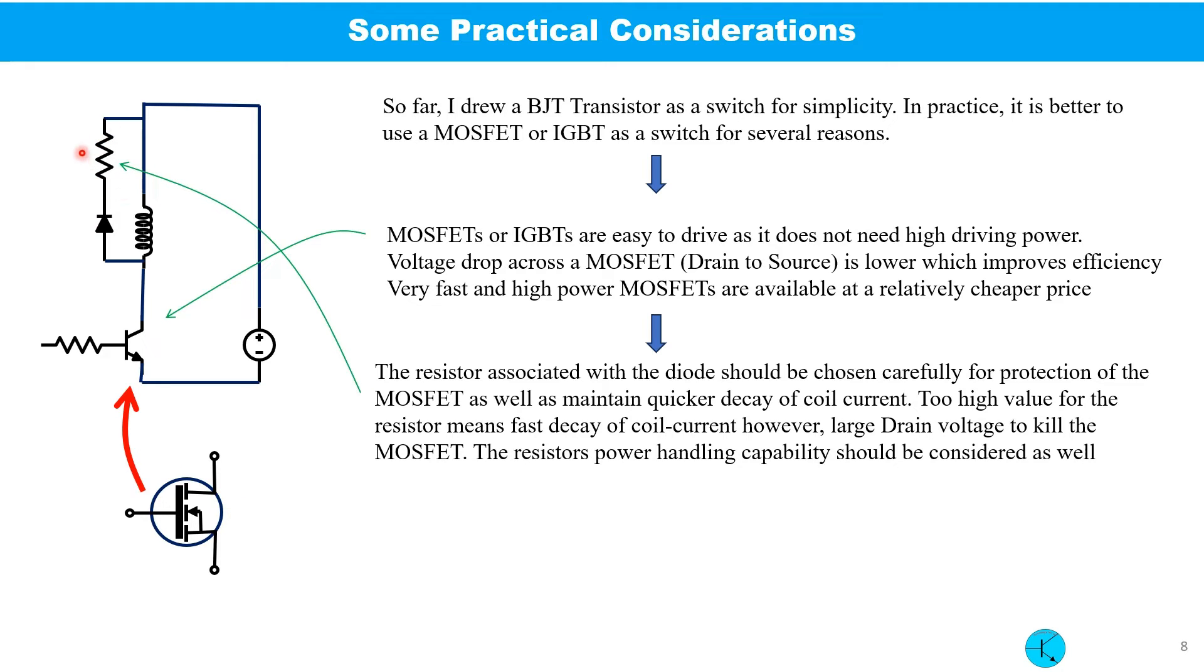Resistors associated with the diode should be chosen carefully for the protection of the MOSFET as well as to maintain quicker decay of coil current. Too high a value for this resistor means fast decay of the coil current. However, a large drain voltage can kill the MOSFET. The resistor power handling capability should also be considered as well.